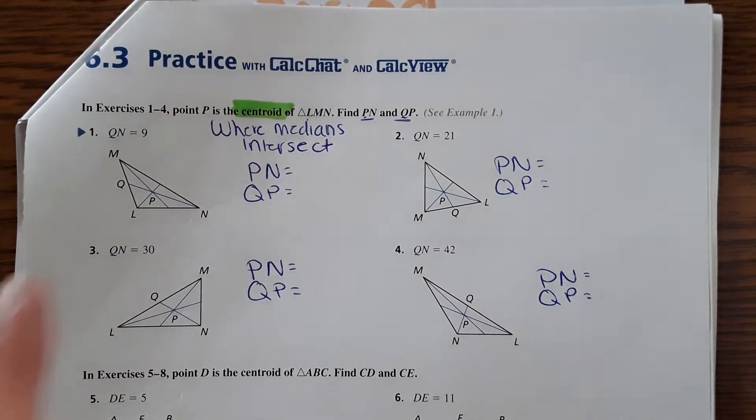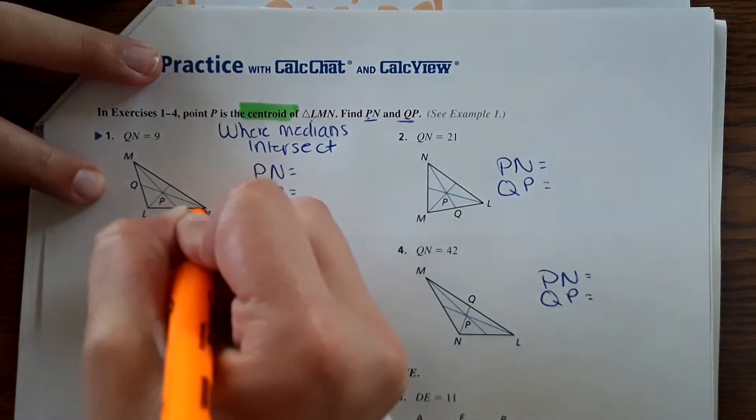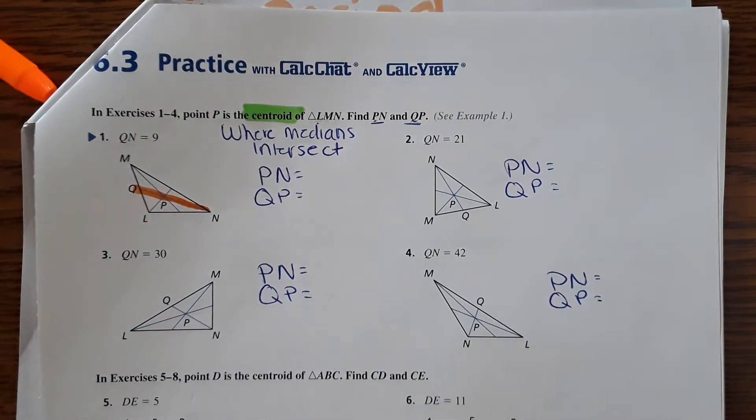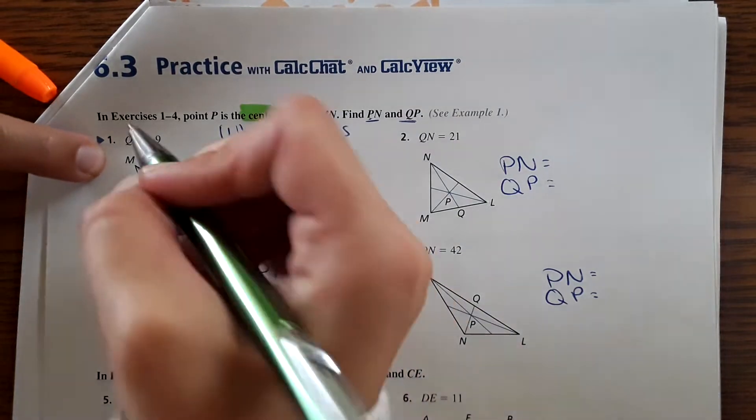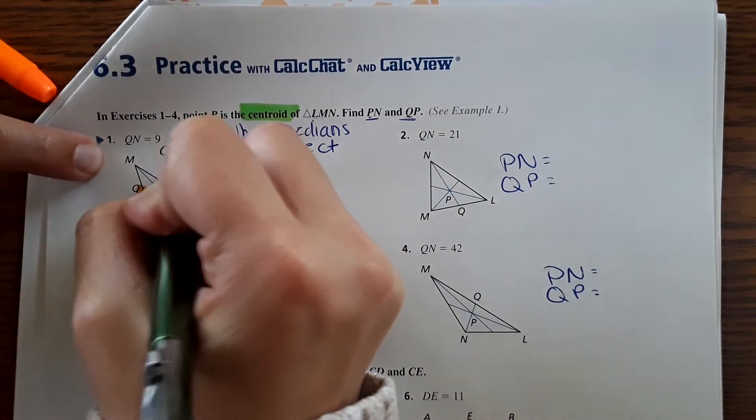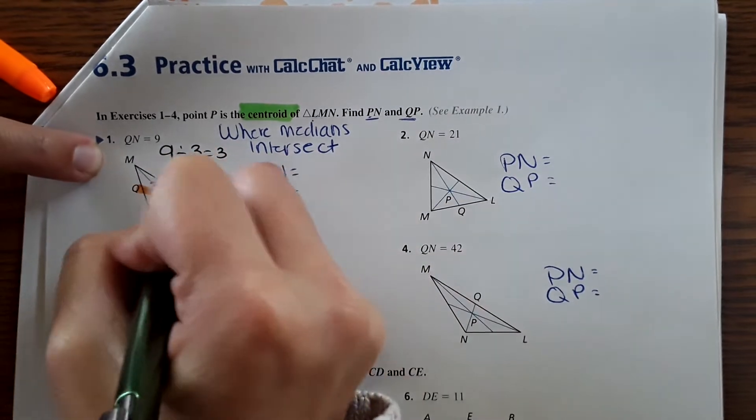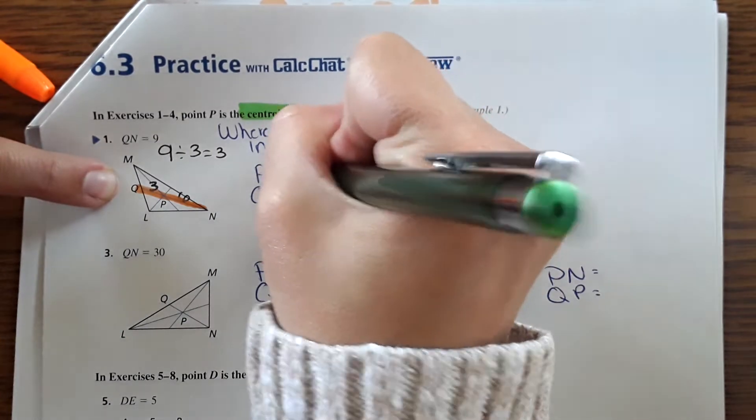Okay, so then it gives us a dimension. For number one, it says QN is nine. So I'm just going to highlight QN here. The whole thing is nine. It wants to know PN, which is the longer part, and QP is the shorter part. So what I'm going to do is: nine divided by three is three. So the shorter side is going to be three, and this would be double that, which would be six. So PQ is three and PN is six.